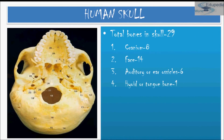The human skull consists of 29 bones. It is made up of cranium bones — 8 in number, facial bones — 14 in number, auditory ossicles — 6 in number, and the tongue bone also known as the hyoid bone — 1 in number. So total 29 bones are found in the skull.